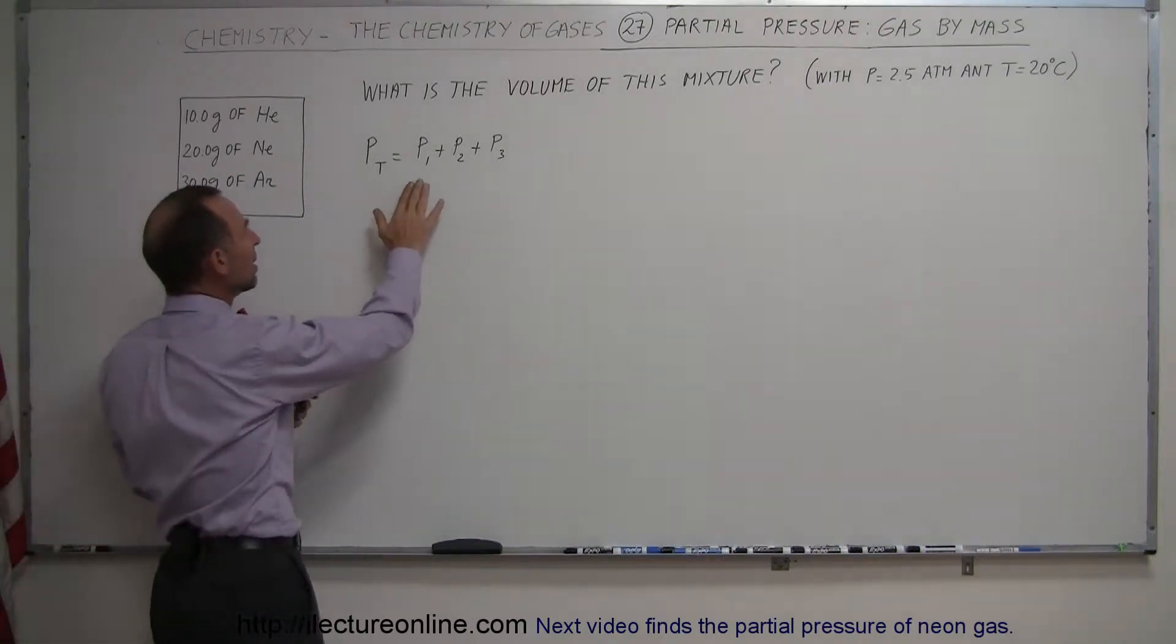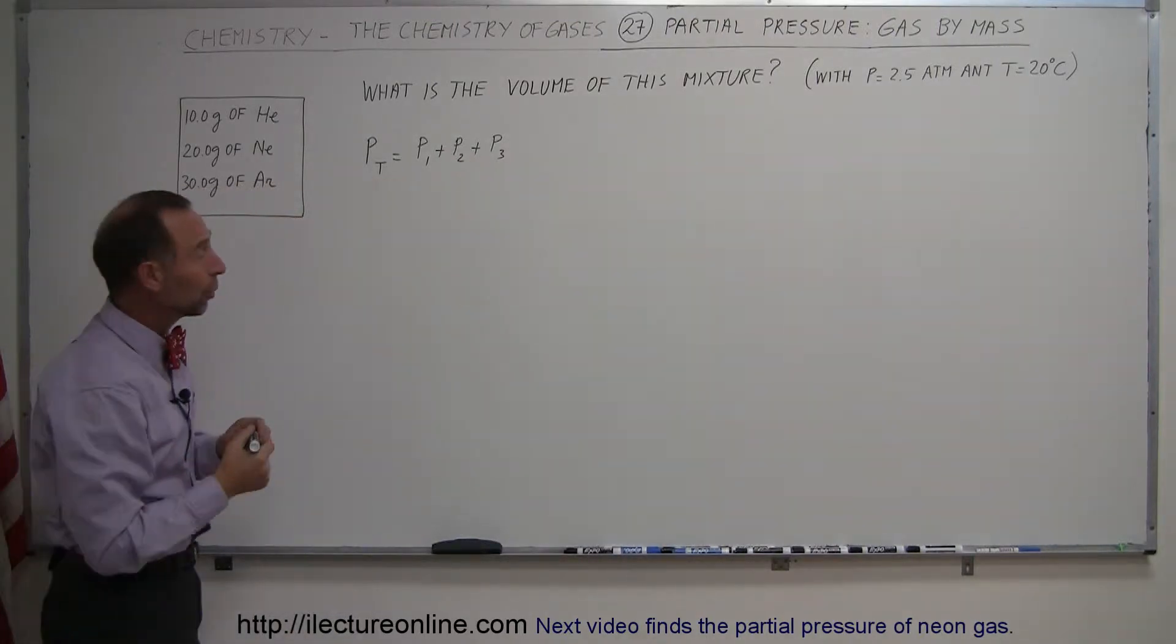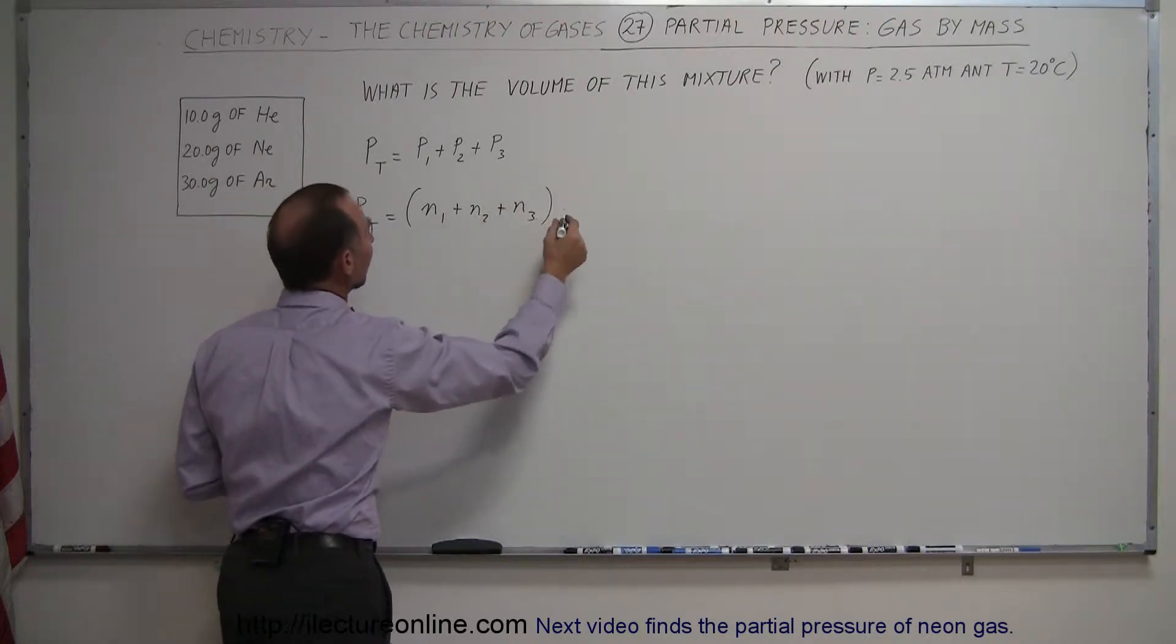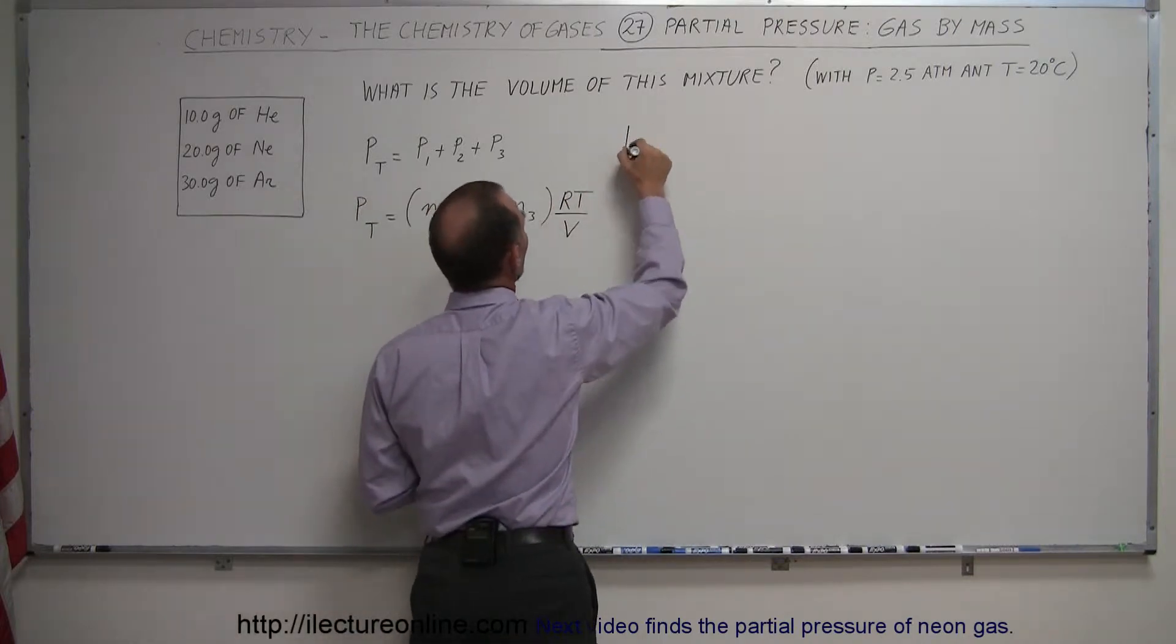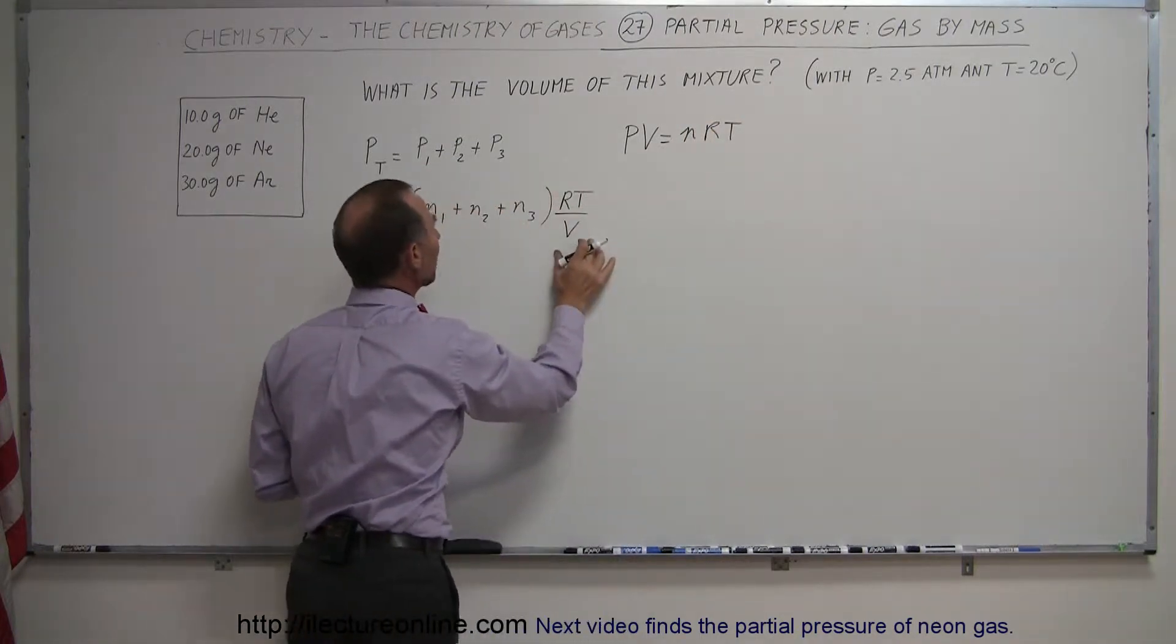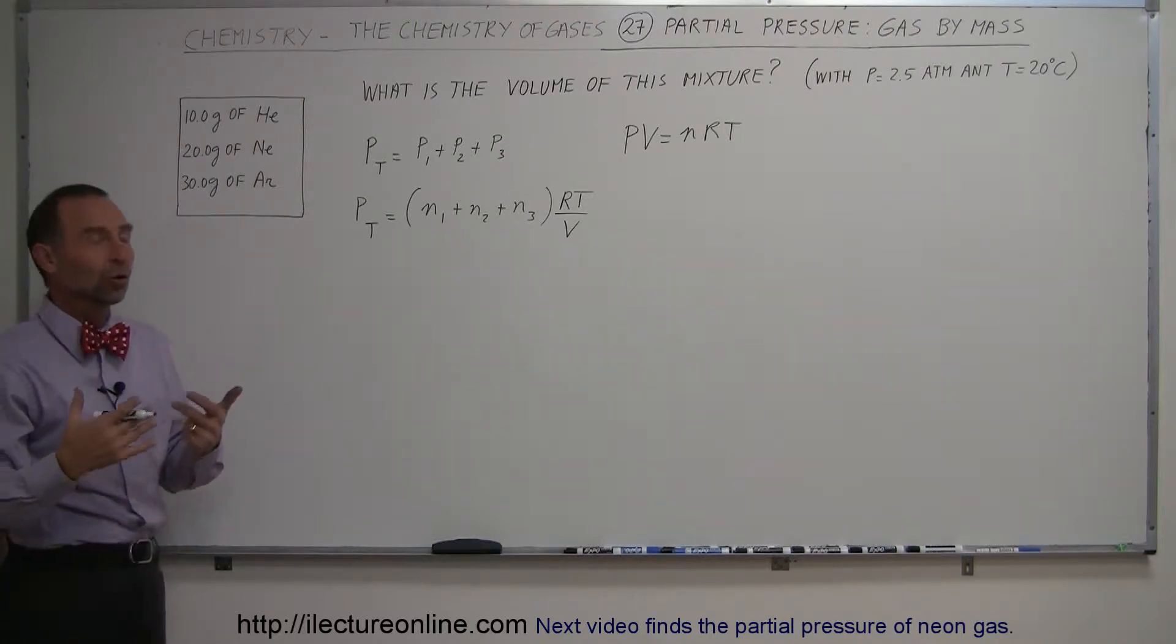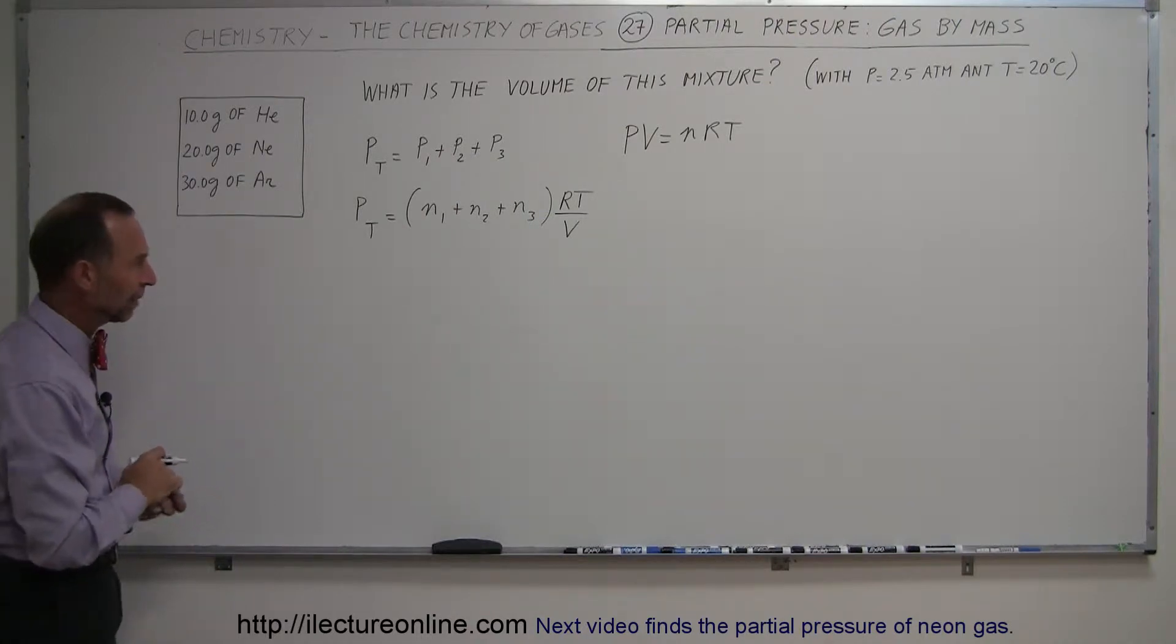We start with the concept that the partial pressures of each component add up to the total pressure. This equation can be written as total pressure equals the sum of all individual numbers of moles of each gas multiplied by RT over V. This comes from the equation PV equals NRT. We put the V over there and get RT over V, and we simply add up the number of moles of each gas, just like we would have added up the partial pressures of each gas, which is also proportional to the amount of volume each gas would occupy if it was by itself under that pressure and temperature.